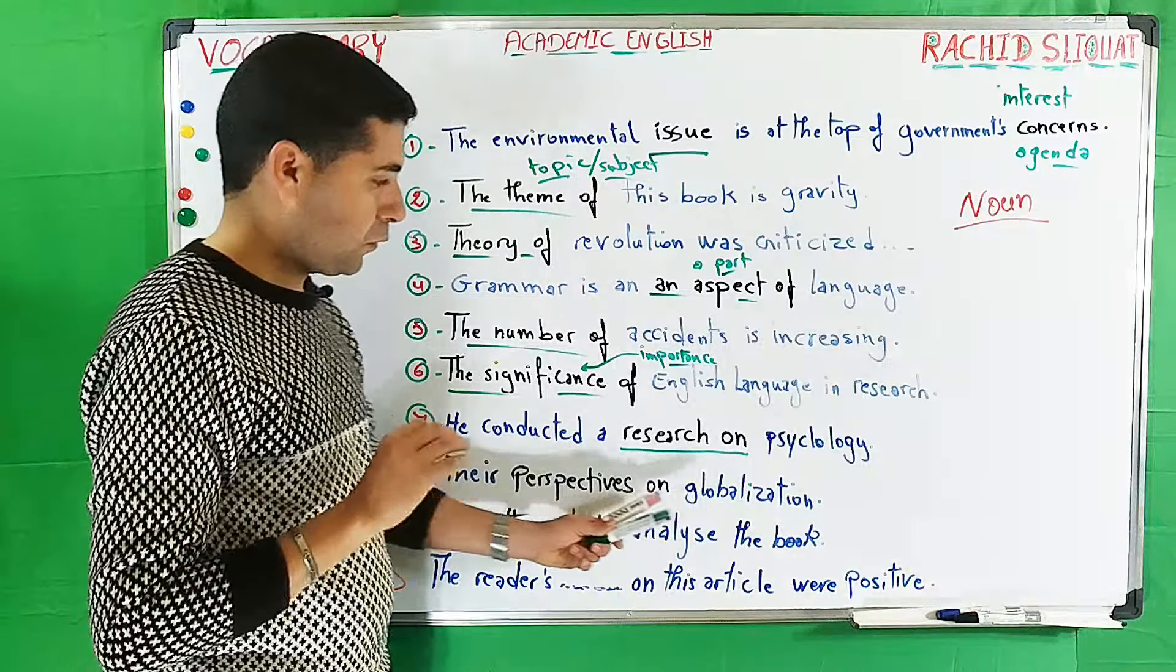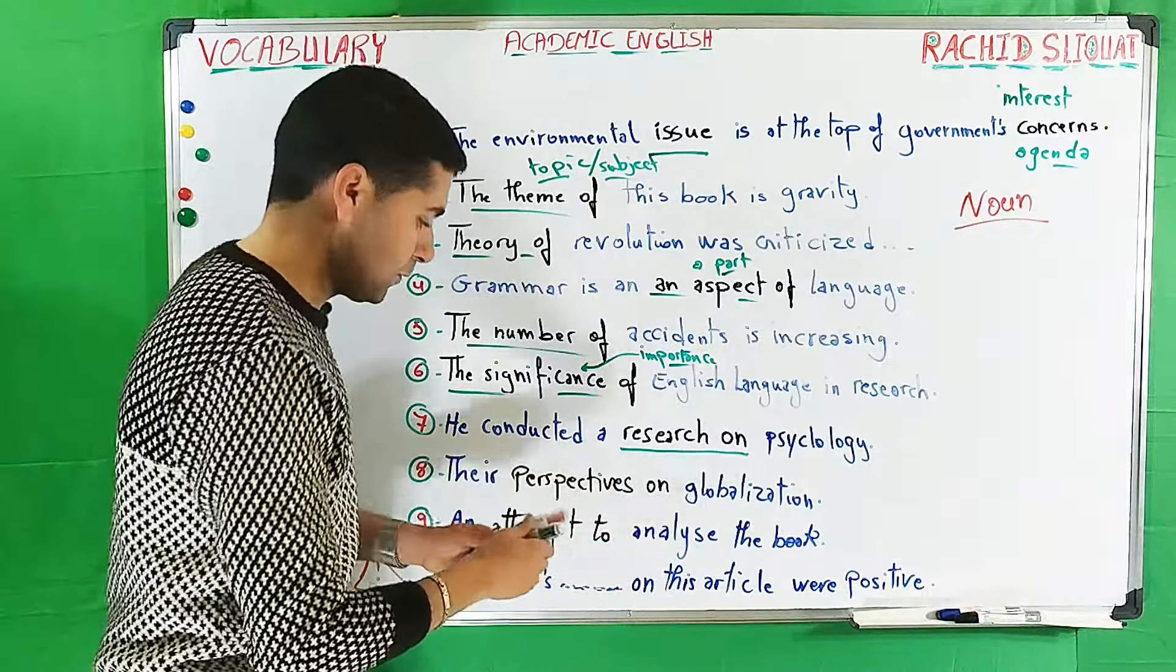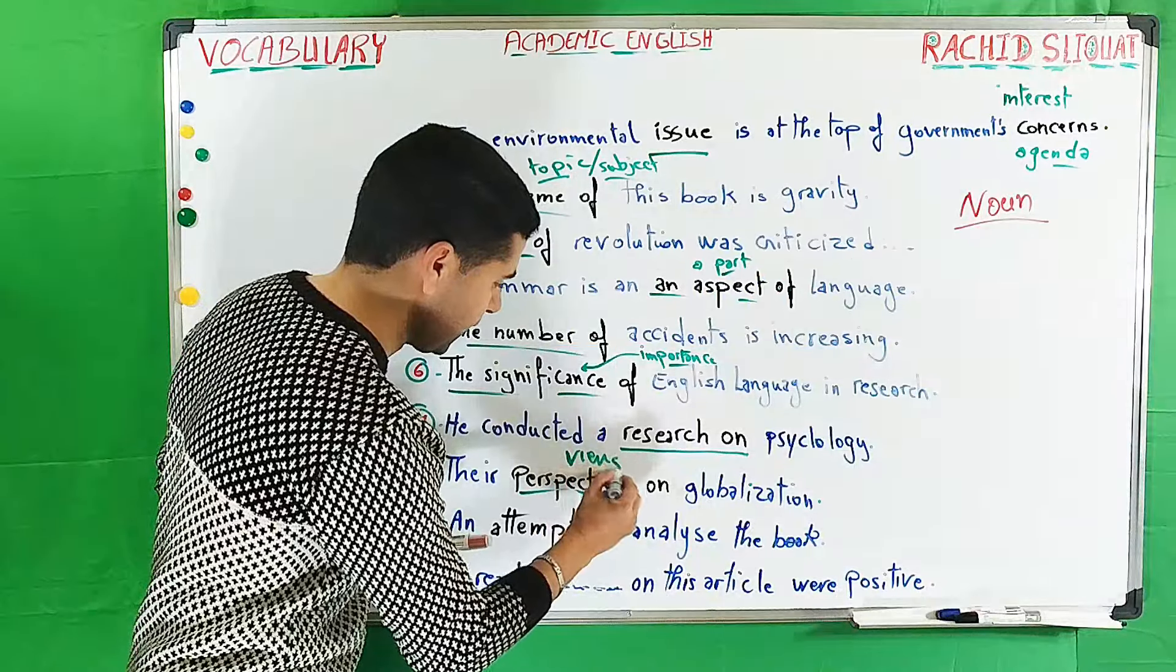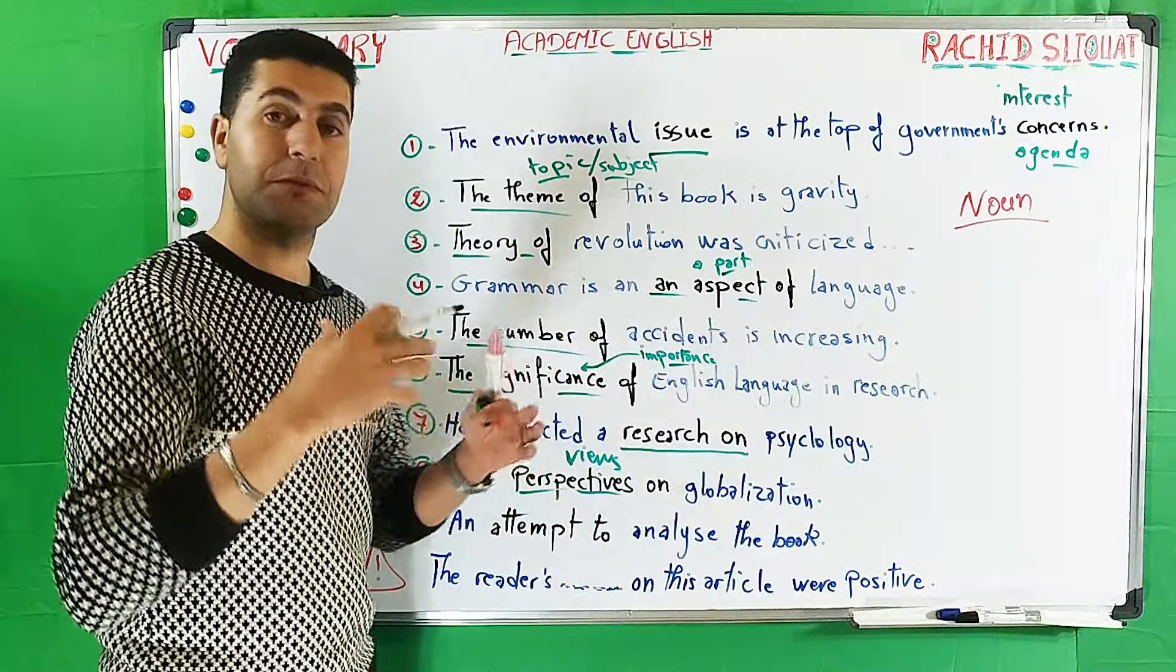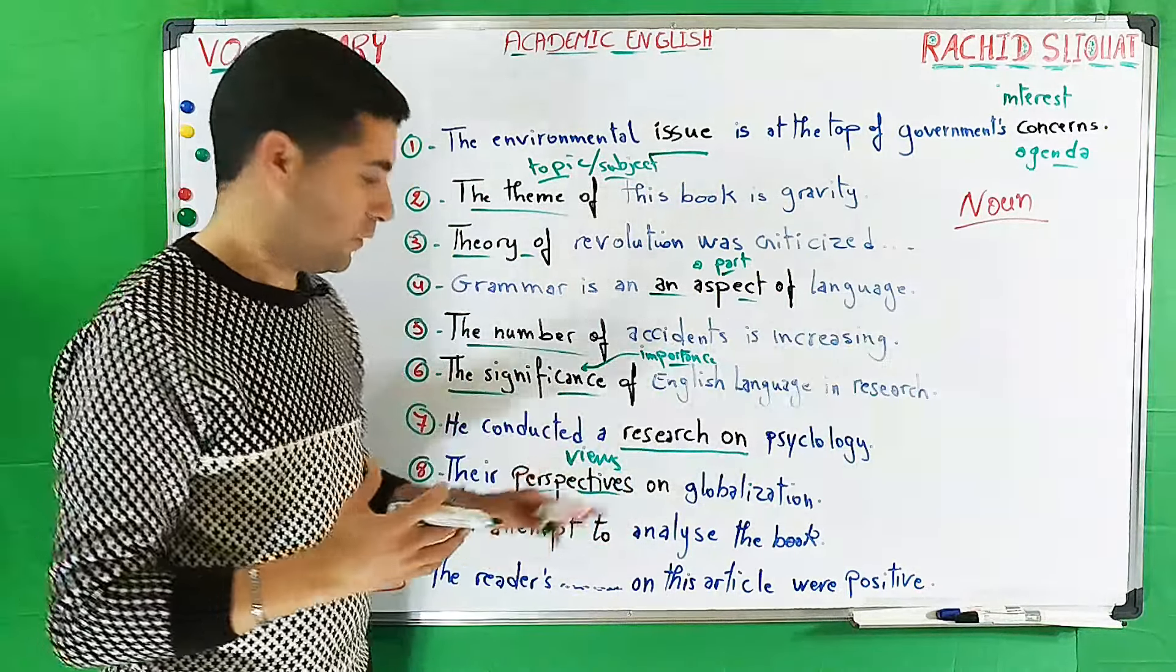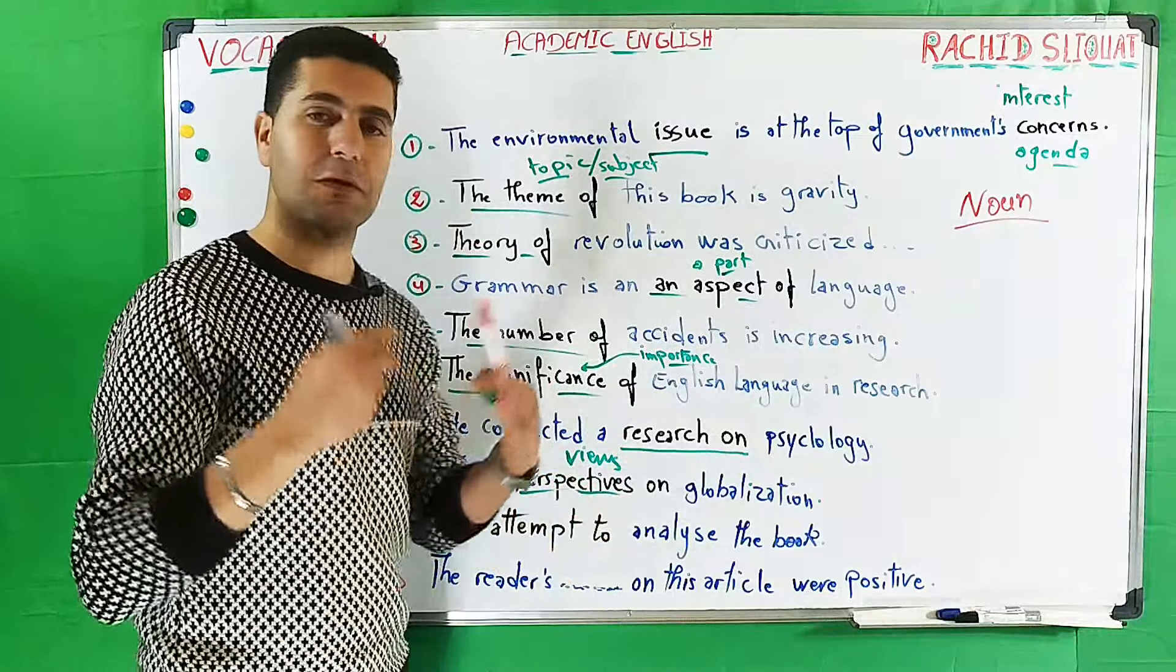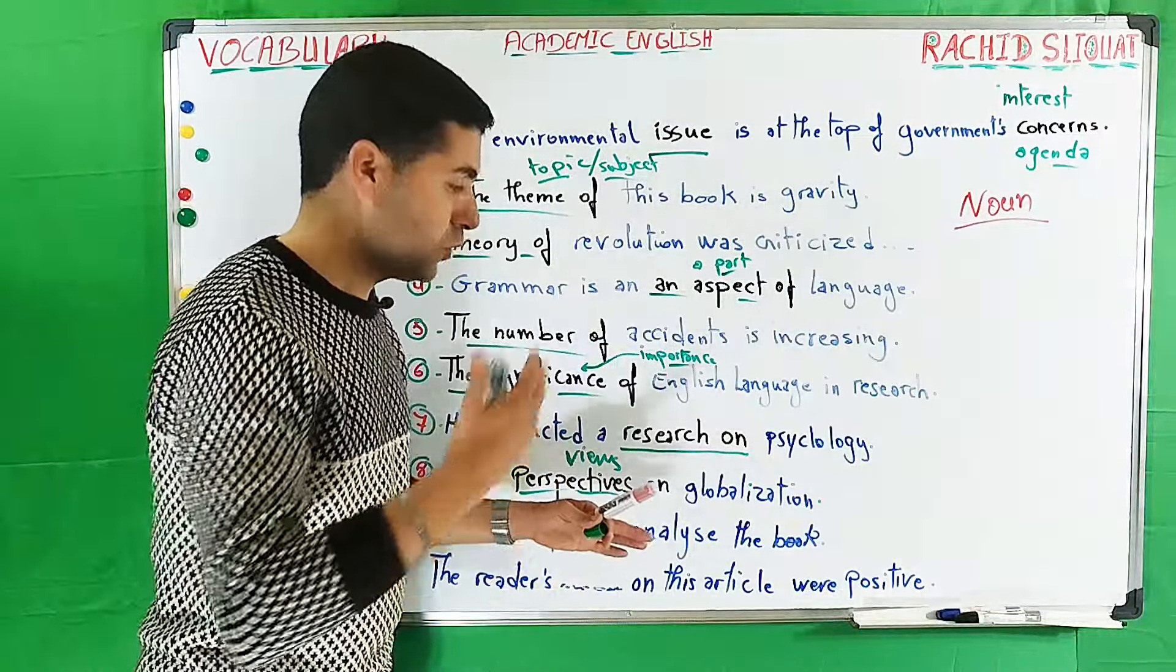Number eight: 'Their perspectives on globalization.' We can say perspectives or views, or opinions. Their opinions, their views, their perspectives on globalization.